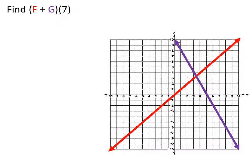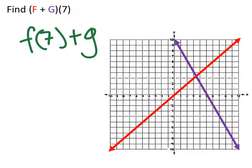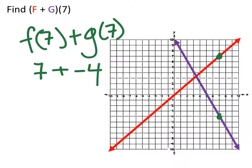What about f plus g of 7? So again, we get f of 7 plus g of 7. And what is f of 7? f is the red, so I got 7 right there, plus g of 7, which is negative 4. 7 plus negative 4 is 3. So there's our answer.